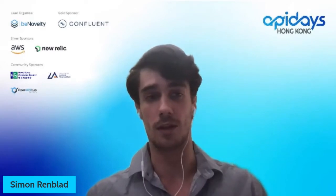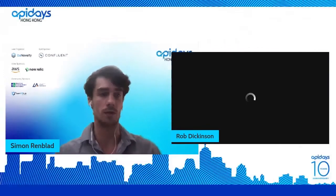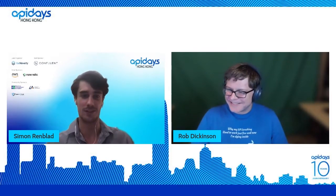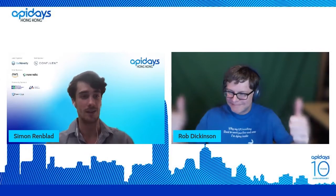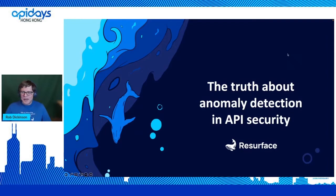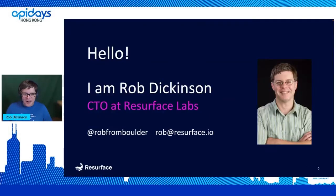Next up I want to introduce Rob, co-founder and CTO of Resurface Labs. Today you're going to talk about the truth about anomaly detection in API security. I am Rob Dickinson, CTO and co-founder at Resurface Labs. You can find me at @robfromboulder on Twitter or rob@resurface.io for email.